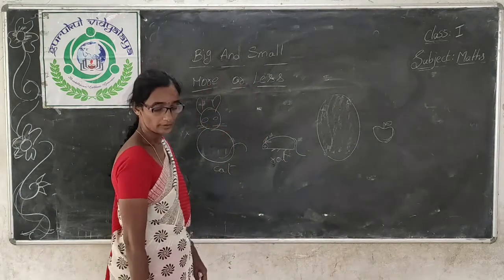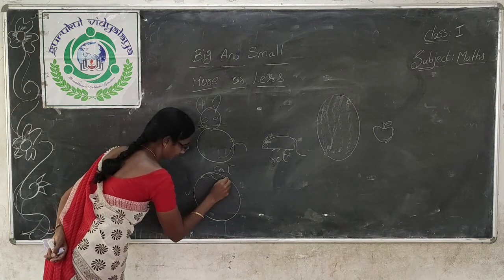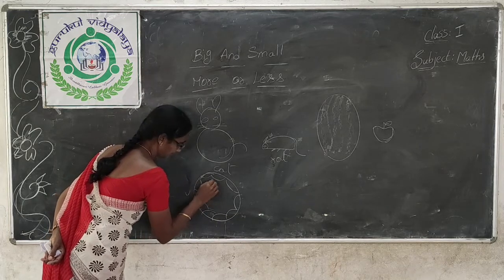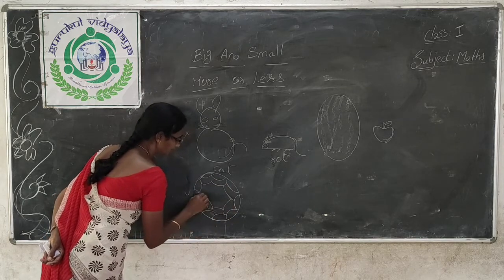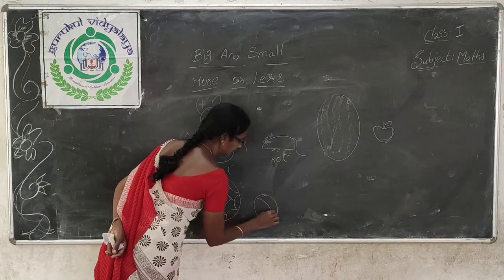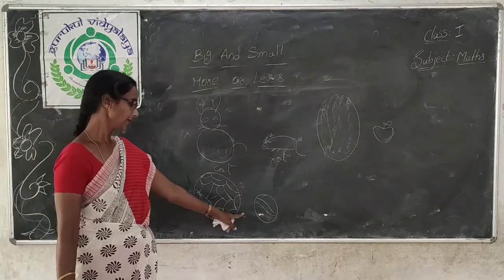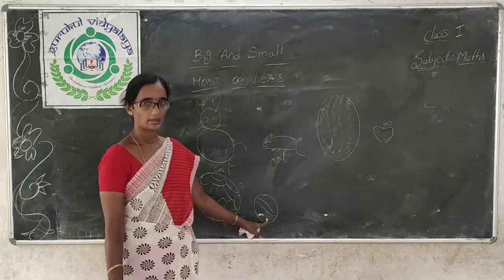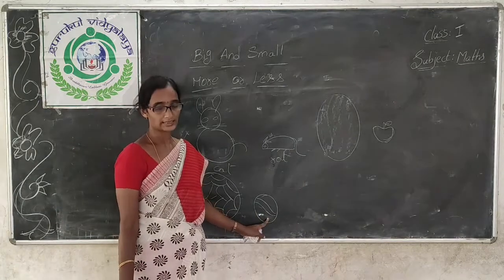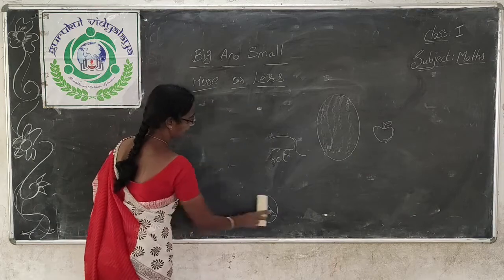And next one more example. What is this, children? Football. And this is cricket ball. Which is in big size? Football is in big size and cricket ball is in small size.